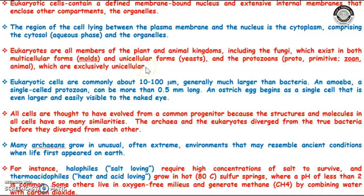Examples of protozoa include amoeba, paramecium, Entamoeba histolytica, etc. Eukaryotic cells are commonly larger as compared to prokaryotic cells and they are bigger than bacteria. An amoeba can be 0.5 mm long, and an ostrich egg can be seen by the naked eye, which is initially a single cell.